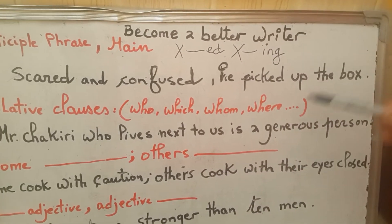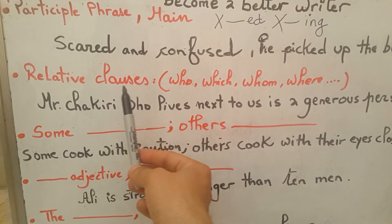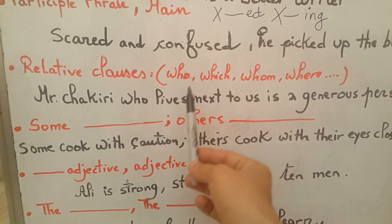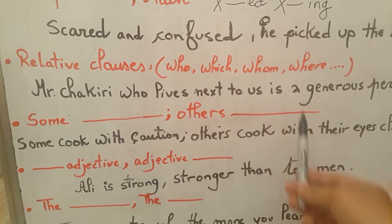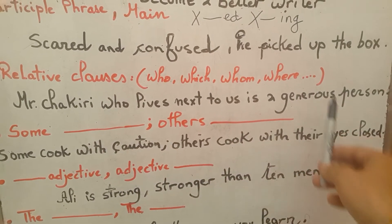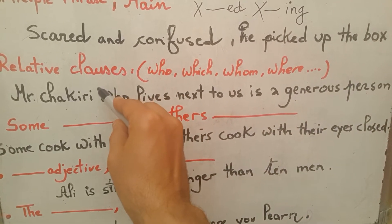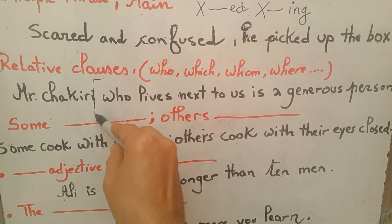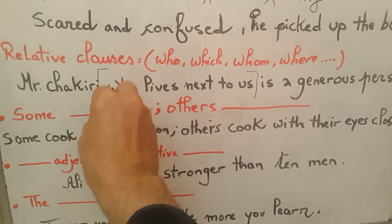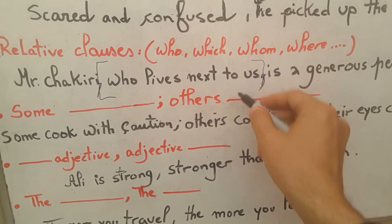Or at the end: 'He picked up the box, scared and confused.' Next are relative clauses, which are introduced by relative pronouns like who, which, whom, where, when, etc. For example: 'Mr. Shakiri, who lives next to us, is a generous person.' The relative clause here is 'who lives next to us', and it certainly needs a comma because it is a non-defining relative clause.